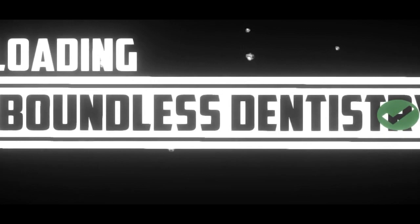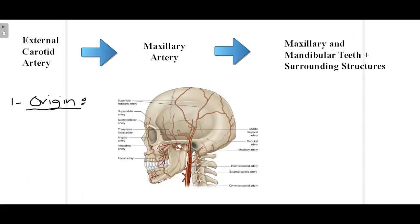It's the maxillary artery that supplies the maxillary and mandibular teeth. The maxillary artery arises from the external carotid artery, which is given off by the common carotid artery. At the level of the neck of the mandibular condyle, the maxillary artery is given off from the external carotid artery. It is one of the two terminal branches of the external carotid artery, embedded in the parotid gland, and it supplies the mandibular and maxillary teeth and surrounding soft and hard tissues.